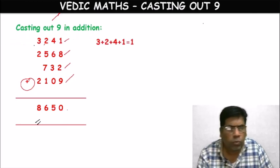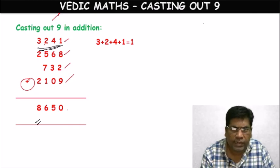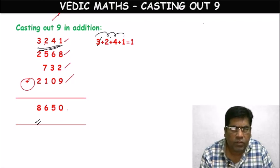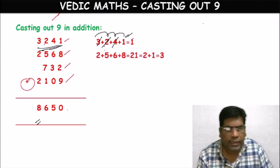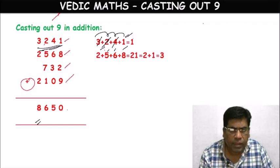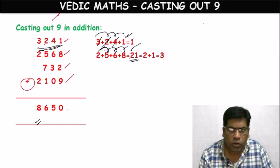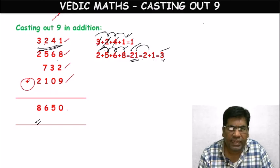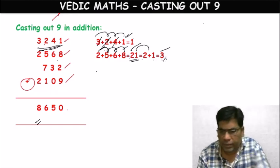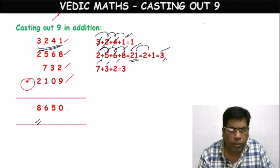For 3241: 3+2+4+1 — is there a possibility of 9? 3+2=5, 5+4=9, cast it out. Remaining: 1. For 2568: 2+5+6+8, no possibility of 9. 2+5=7, 7+6=13, 13+8=21. Then 2+1=3. Second number single digit is 3. For 732: 7+3+2 — 7+2=9, cast it out. Remaining: 3.